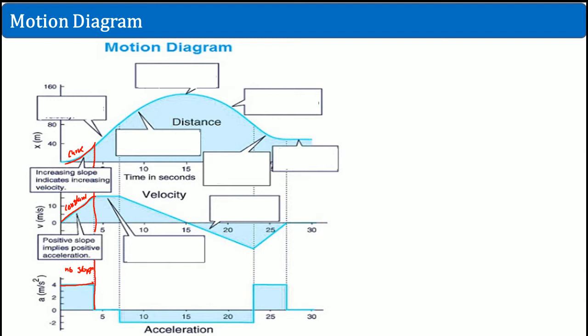Now the next part. Do you see how here the position curves, but now it's linear — it's not curving anymore. This is constant, and constant slope means constant velocity. So right here, constant slope. This means zero slope on the acceleration — it's flat here, because the position is linear. So the acceleration is zero here. The velocity goes up to around 15 meters per second.